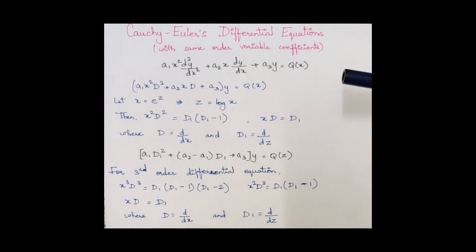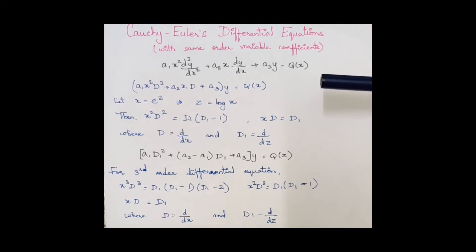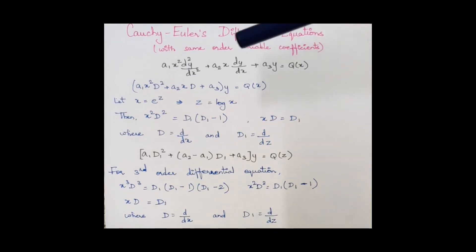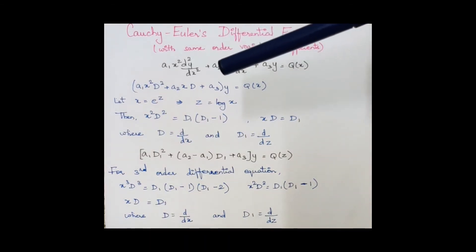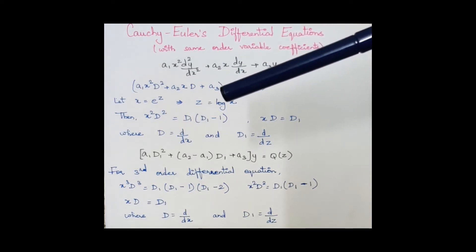Cauchy-Euler equations are of the form a1·x²(d²y/dx²) + a2·x(dy/dx) + a3·y = q(x). The key difference from previous equations is that here we have x² as a variable coefficient, whereas before we had only constants as coefficients. This difference requires a different approach to find the solution.